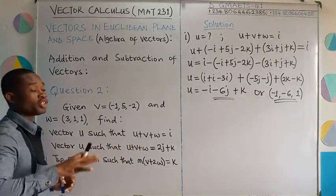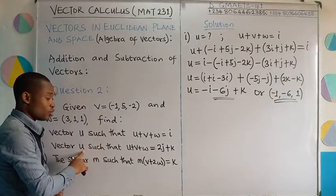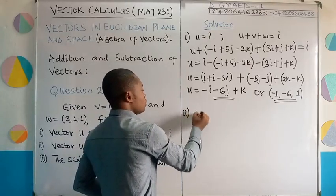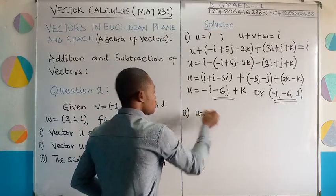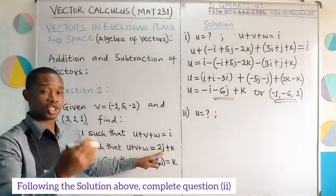Let us now move on to the second part of our question. We are, again, required to find the vector u such that this condition holds. So this part ii of the question u, again, we don't know. Subject to the condition that u + v + w is equal to 2j + k.